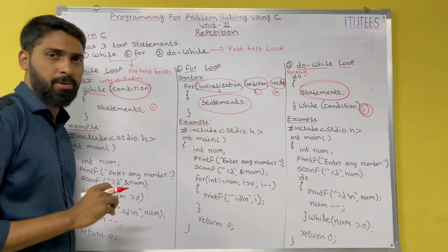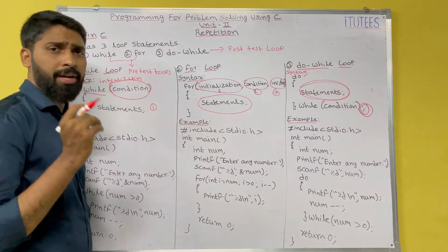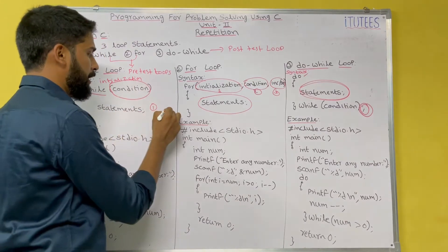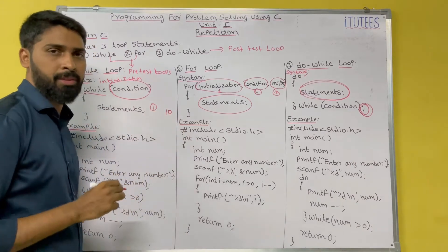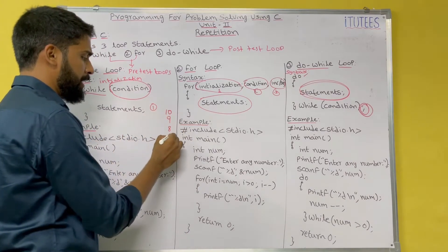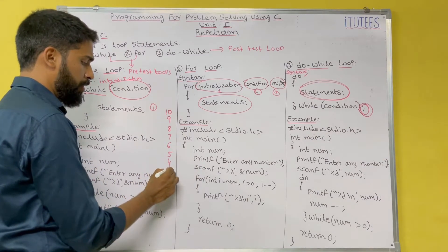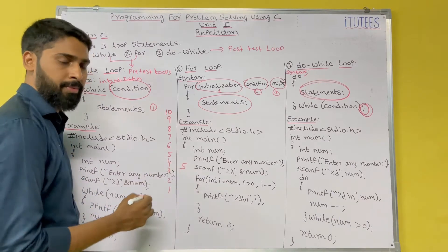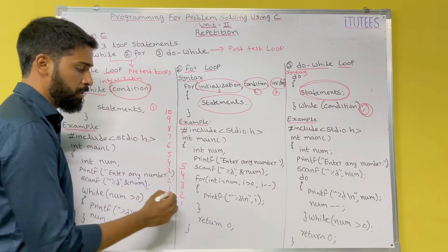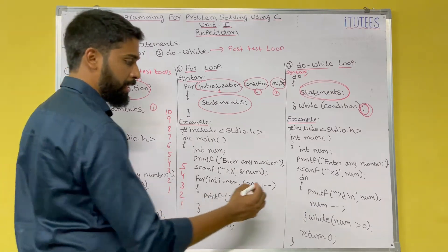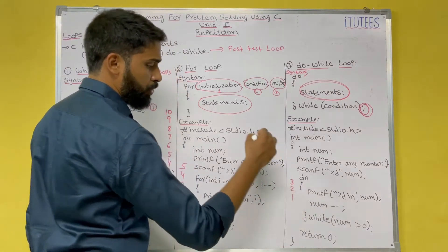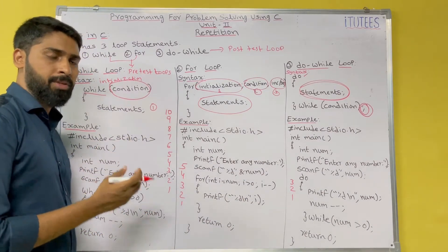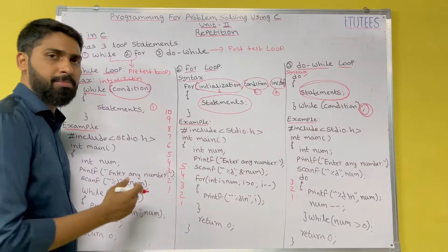Now we are going to see an example. The program will print numbers in descending order. For example, if I enter 10, it prints 10, 9, 8, 7, 6, 5, 4, 3, 2, 1. If I enter 5, the output is 5, 4, 3, 2, 1. The program reads one value from the keyboard and decrements it until the value becomes 0.